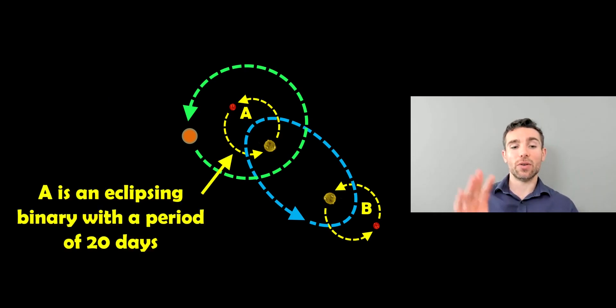So you've got two binary systems. A is an eclipsing binary with a period of about 20 days, whereas B is not.